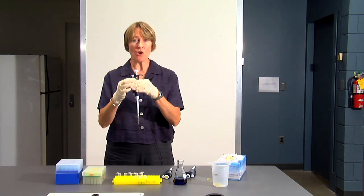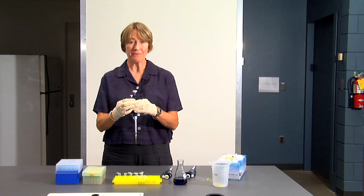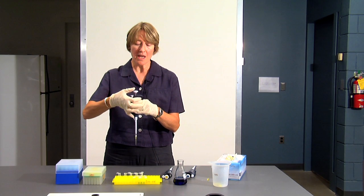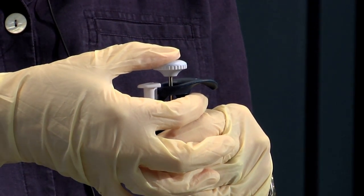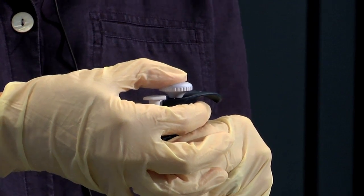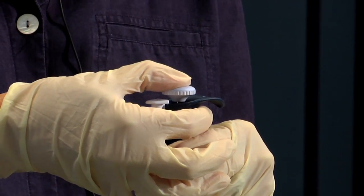The other thing to notice about the pipettes is that there are two stops on the plunger. This is the plunger. If you press the plunger to the first stop, it goes down pretty easily. If you press the plunger to the second stop, it's a little bit harder. And I'll tell you what that's for as we go through the demonstration for how to use it.